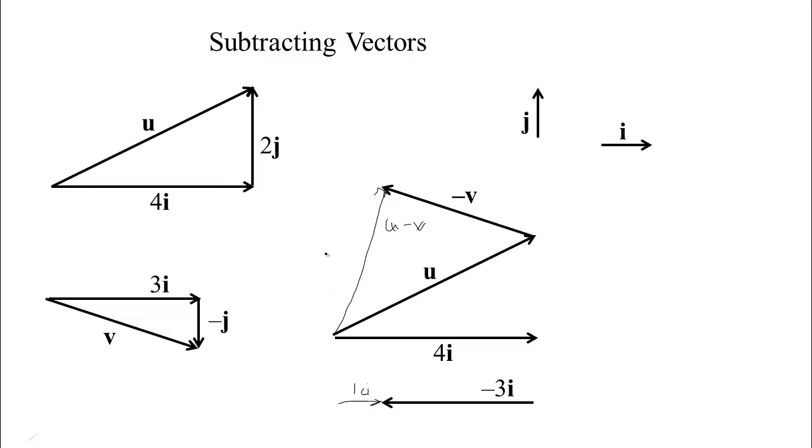We can do the same thing with the j. Since u carries you up 2j, and subtracting v, v normally carries you down 1, so the opposite of v will carry you up 1. So you get a total of 3j there.